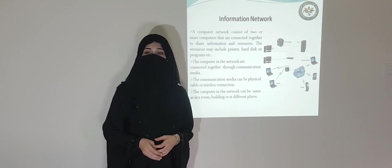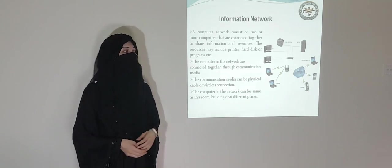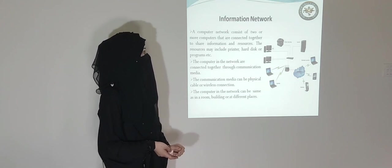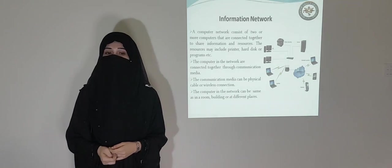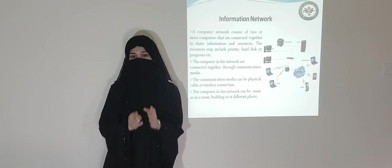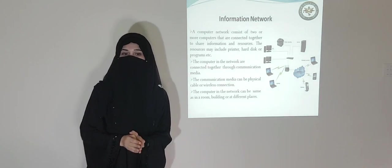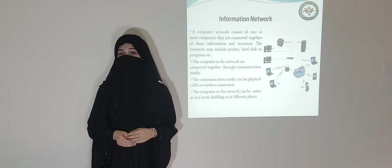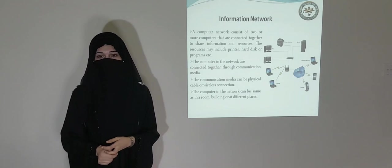First of all, what is an information network or computer network? What is the definition of a computer network? A computer network consists of two or more computers that are connected together to share information and resources. This means that a computer network is a network in which two or more computers are connected with each other, and after connecting they can share their data, information, and resources.